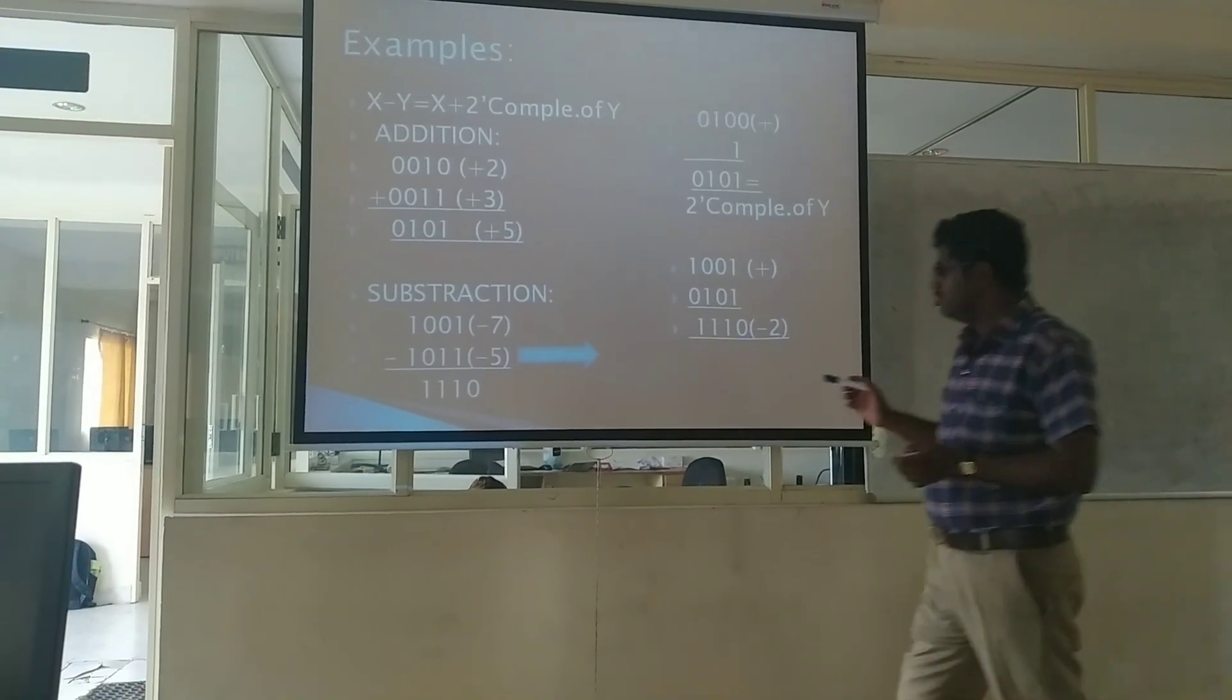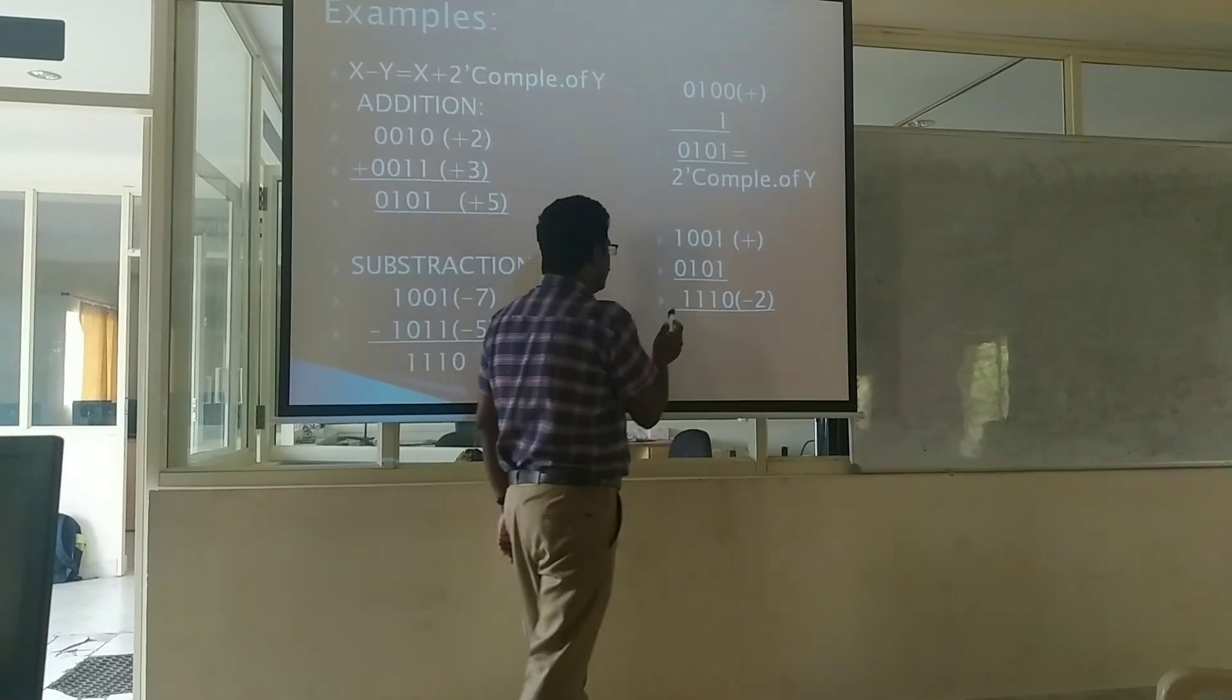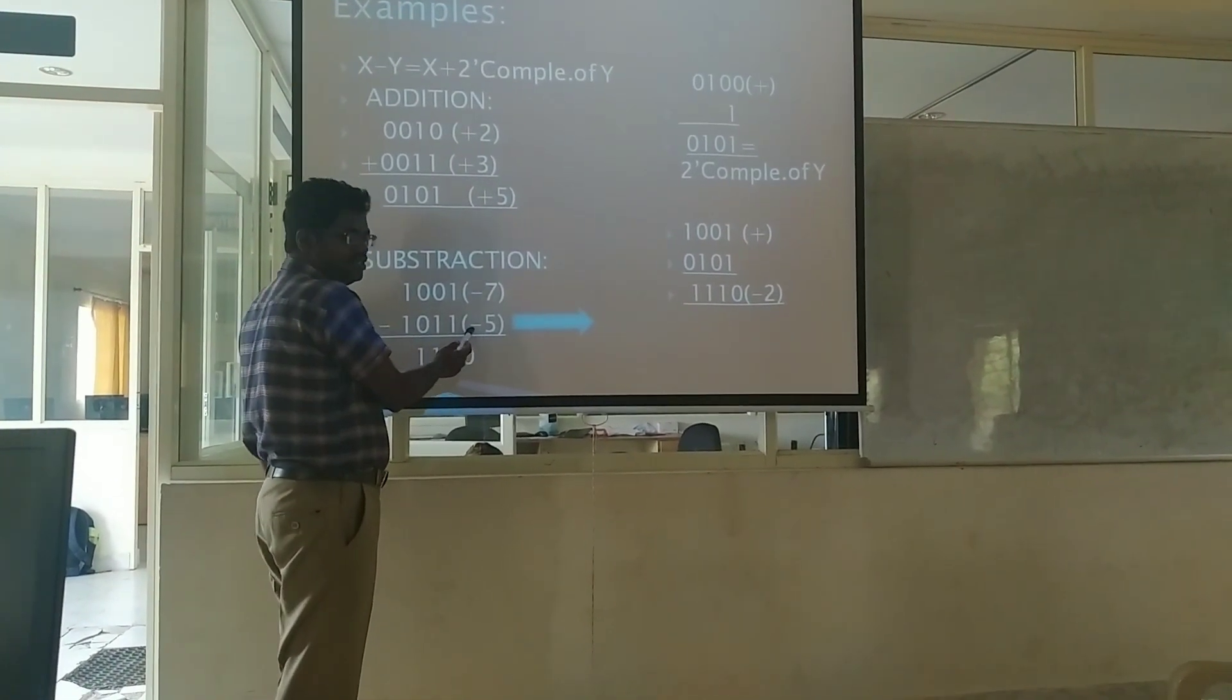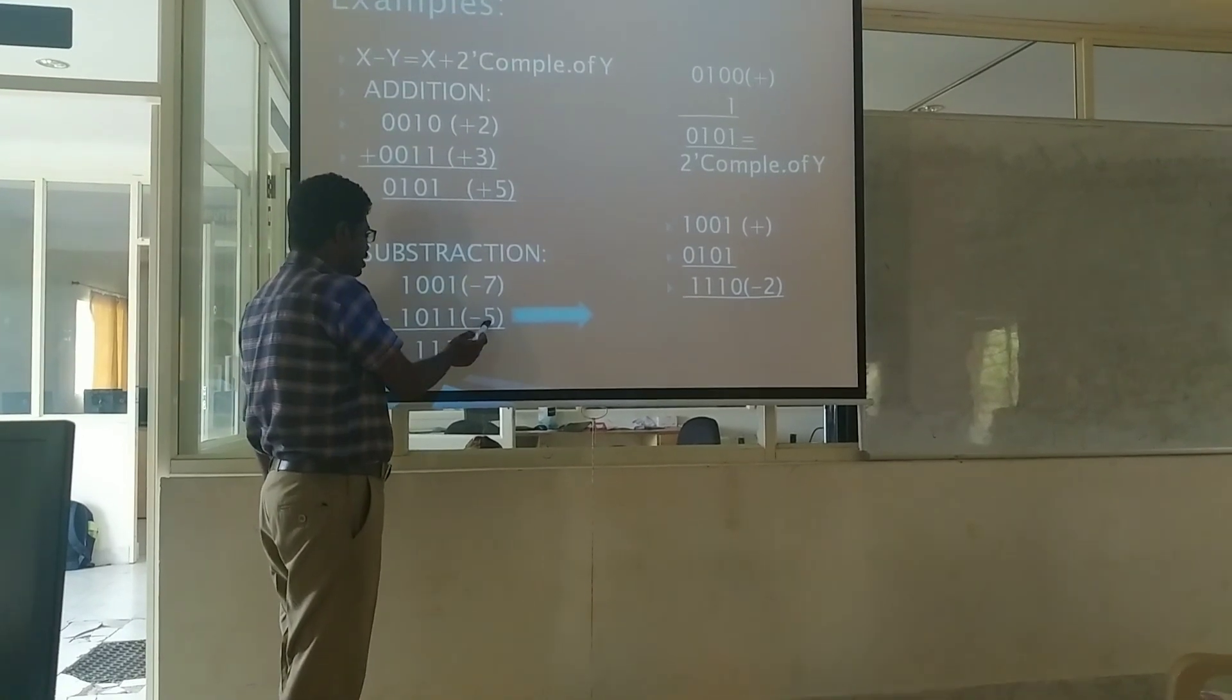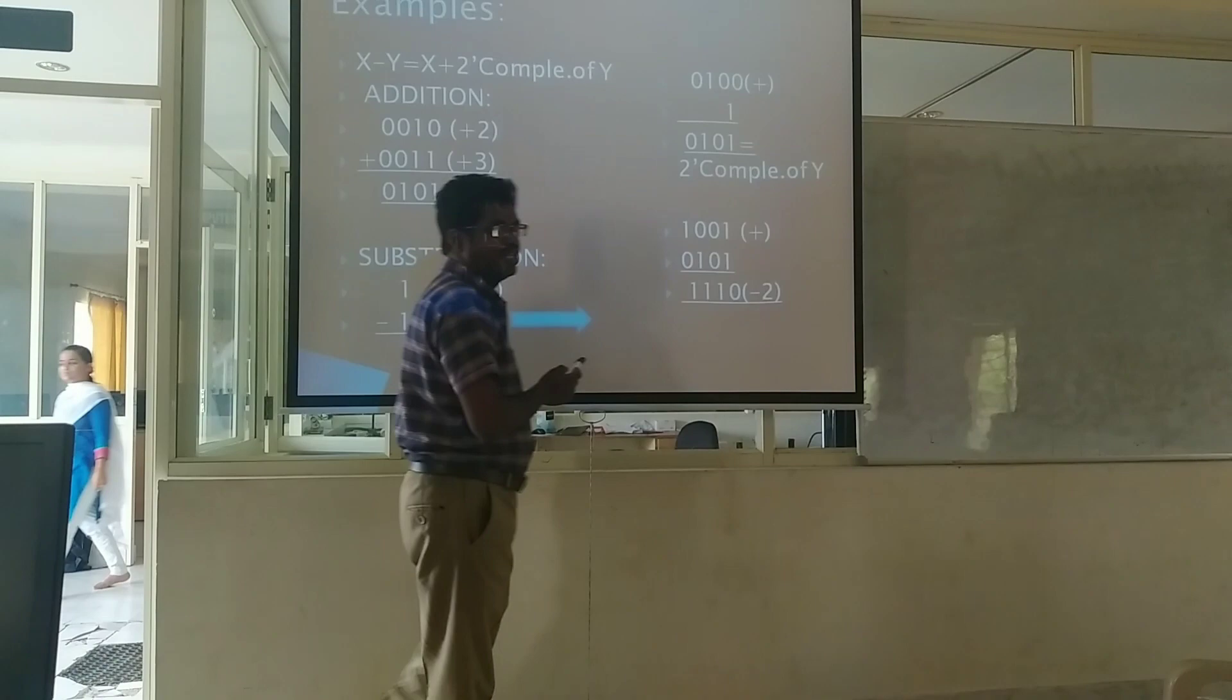Yeah, so it will print the answer of 1110 where it is equal to the number minus 2. And moreover, how can you verify it? Minus 7, here already minus 5 is there. Here minus is there. So minus 7 minus plus 7, so minus 5 plus 5, the answer is minus 2.